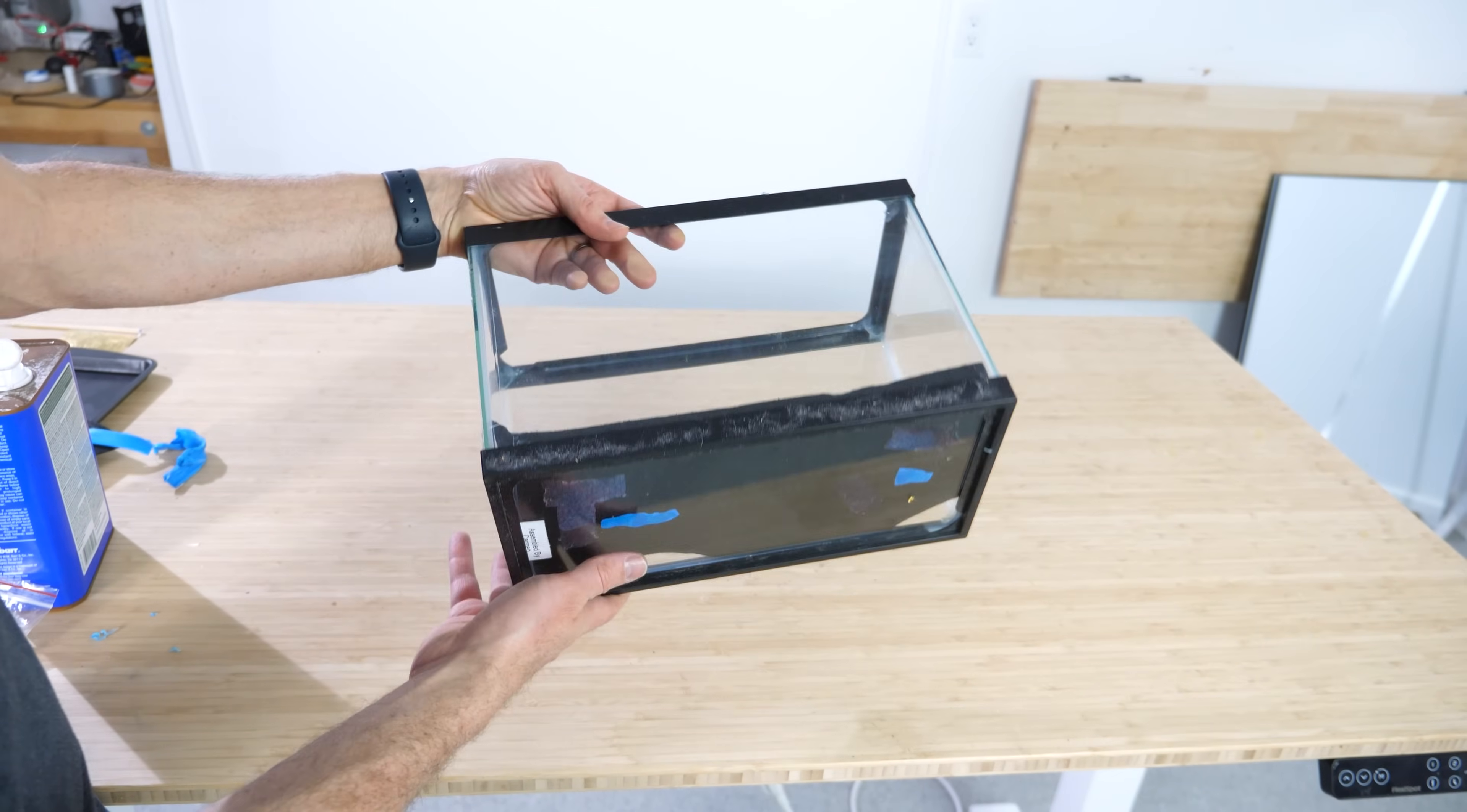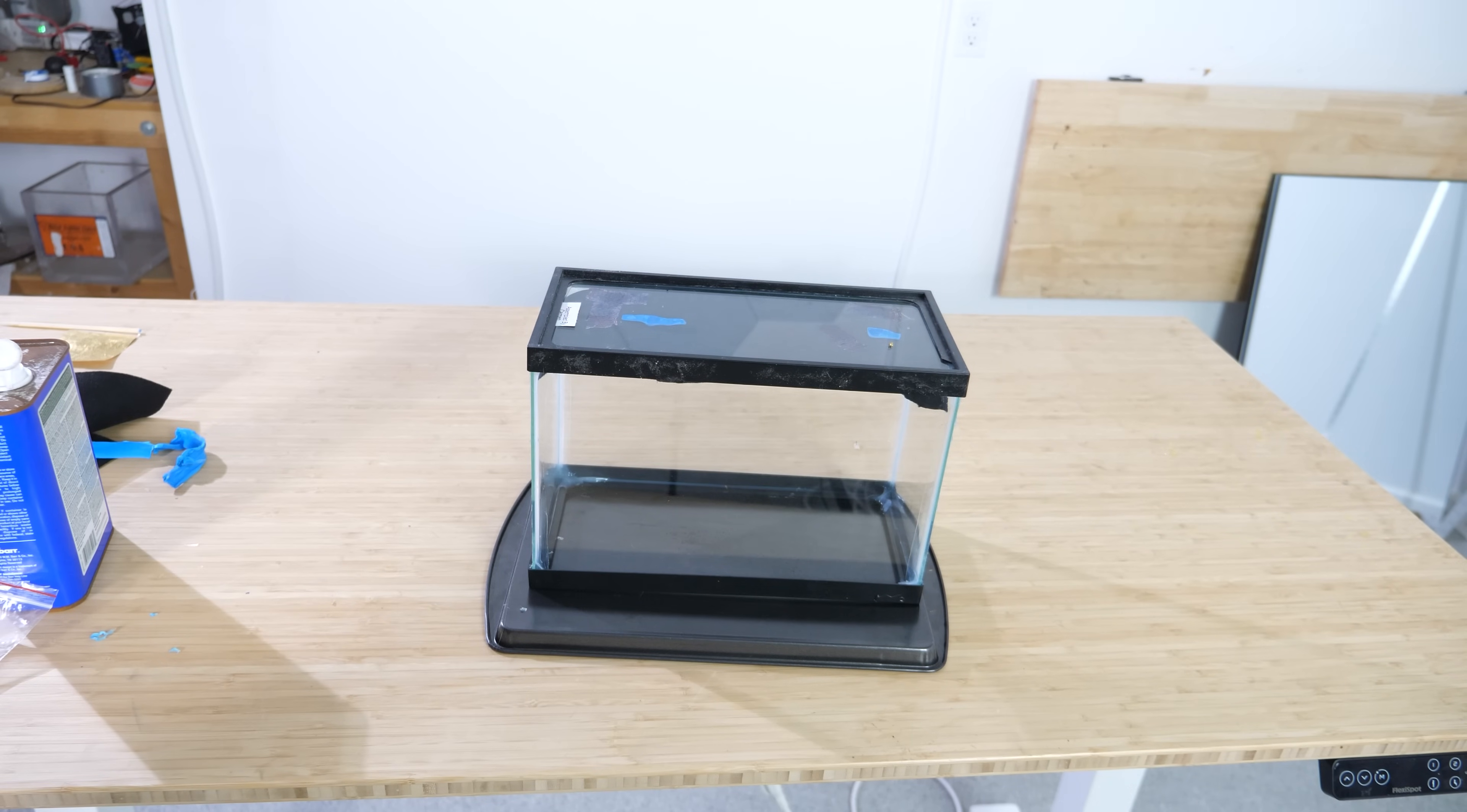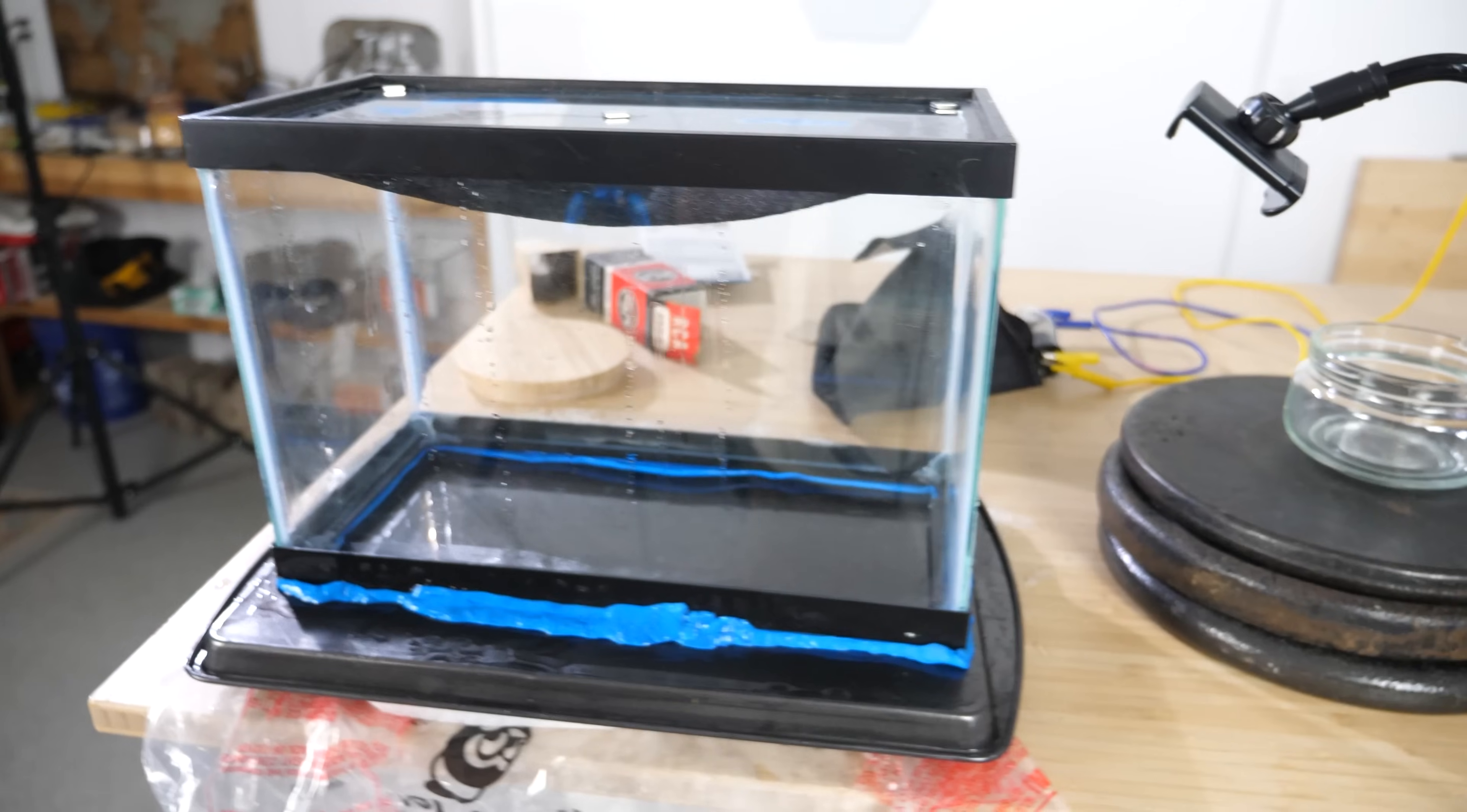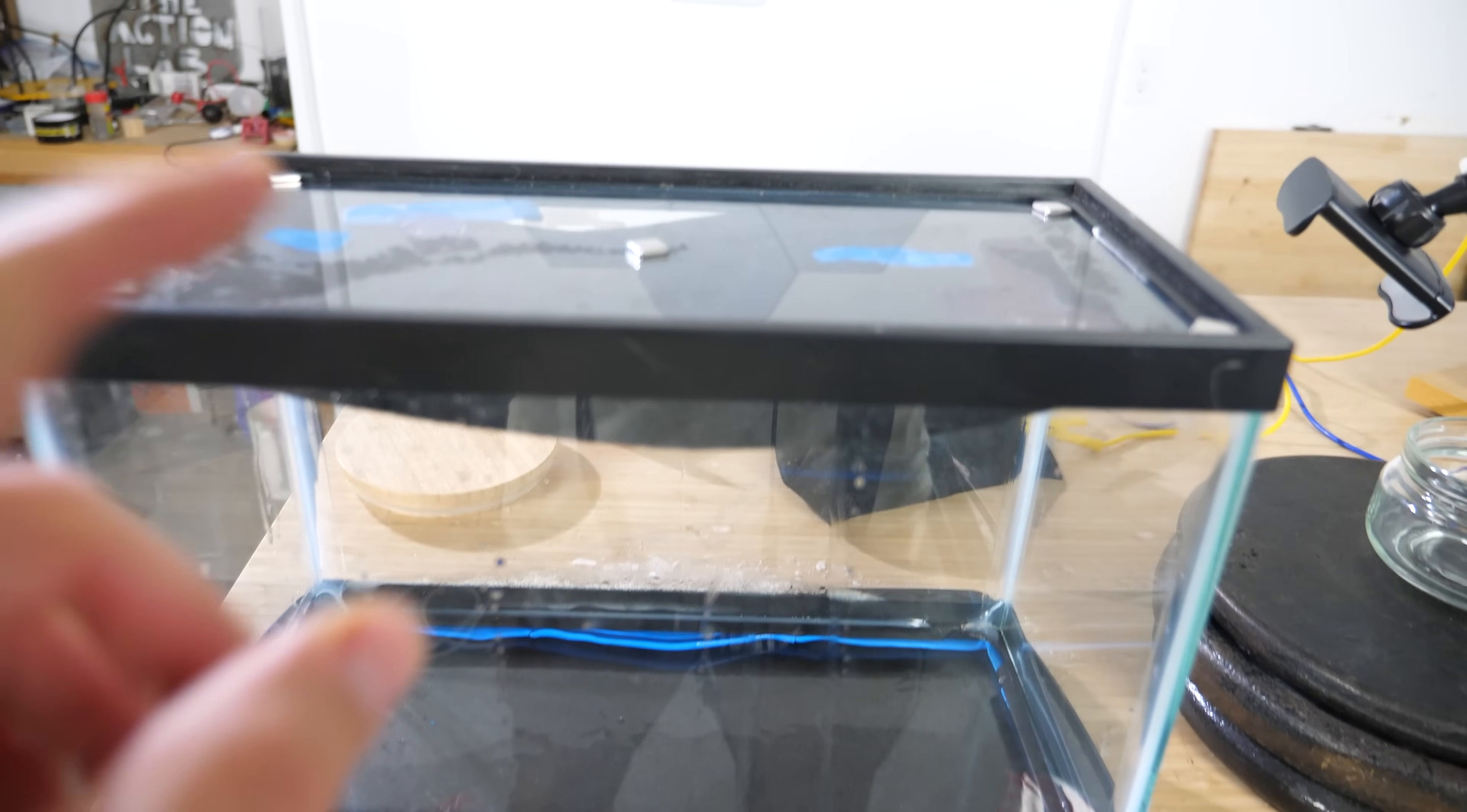To make my cloud chamber, first I'll soak some felt with 99% isopropyl alcohol. Next I'll seal the chamber with a dark cookie sheet at the bottom. That's to make the tracks easier to see. I'll set the whole thing on a block of dry ice to super cool the bottom. When the alcohol vapor gets cold enough near the bottom, it becomes super saturated. That means it's ready to condense when any ionizing particles fly through. Now let's see if it's working.